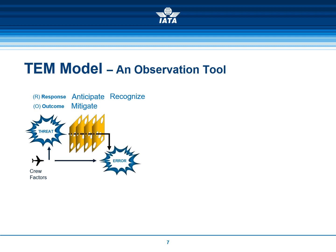As an analyst, when reading a report, you have to ask yourself: what are the threats, and consequently, what is the response and what is the outcome? In this model, an error is the consequence of a mismanaged threat or the direct result of the pilot's action or inaction.